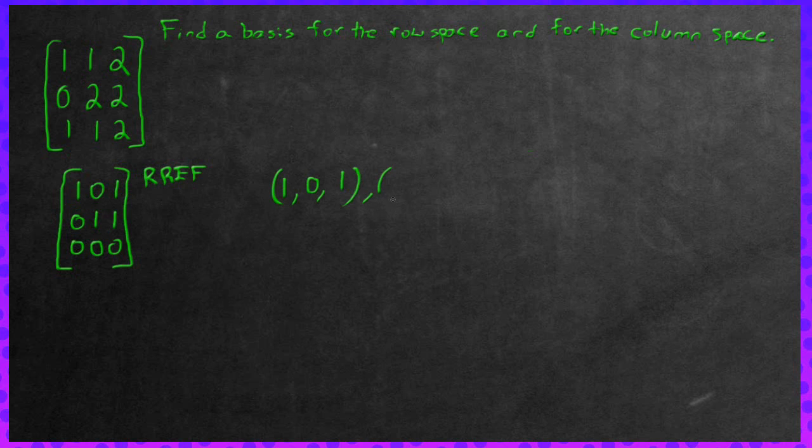So the next vector inside the basis for the row space is going to be 0, 1, 1. And notice that we're not going to be even considering this to be a vector because there are no leading ones. This right here is the basis for the row space and that is how you find it.